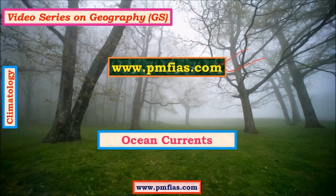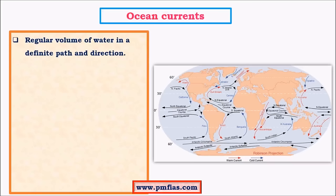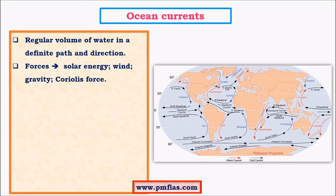In my previous videos I have explained about pressure belts and permanent winds. Pressure belts, permanent winds, and ocean currents play an important role in determining the temperature distribution on earth, and hence ocean currents will be dealt under climatology instead of oceanography. Ocean currents are a regular movement of water in a definite path and direction. The forces that influence this movement are solar energy, wind, gravity, and Coriolis force. Of all these forces, the most important is wind.